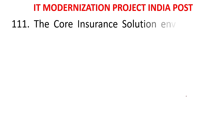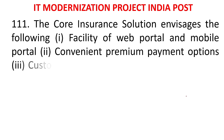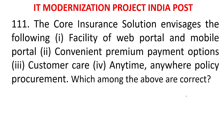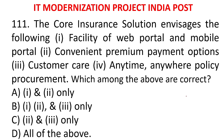MCQ 107: The core insurance solution envisages the following: 1) Web portal and mobile portal, 2) Convenient premium payment options, 3) Customer care, 4) Anytime anywhere policy procurement. Which of the following are correct? A) One, two only; B) One, two, three only; C) Two and three only; D) All of the above. The answer is all of the above are correct.